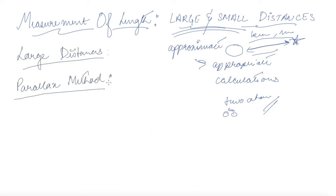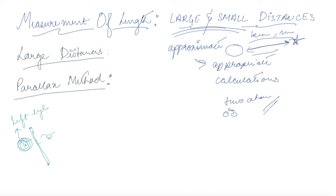Before explaining the parallax method, let me give you a physical example. Suppose these are your two eyes, this is your nose, and you put a pencil in front of you. If you close your left eye, you will see the pencil in a different position. While opening both eyes you see the pencil at one position, but when you close your left eye you see the pencil in a different position.